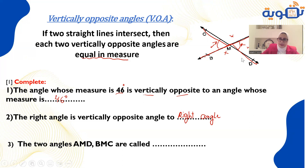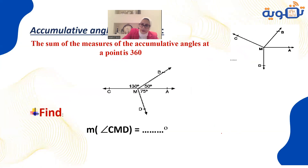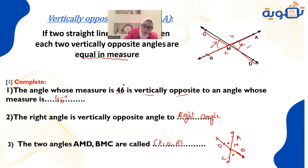The two angles AMD and BMC — I'll draw it for you. Here are two straight lines, M is the intersecting point, with points A, B, C, D. These two angles are vertically opposite angles, which we write as VOA — vertically opposite angles.